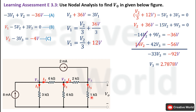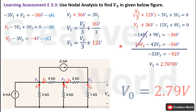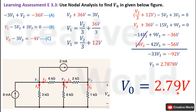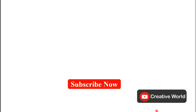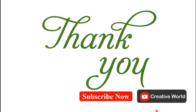As discussed, voltage V3 appears across the 1 kΩ resistance with the same polarity as V0, so V3 equals V0. Therefore, the value of V0 in this network is approximately 2.79 V. This concludes Learning Assessment E3.3. Thank you, and see you again in the next video.